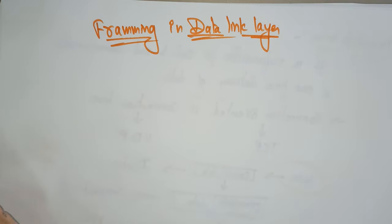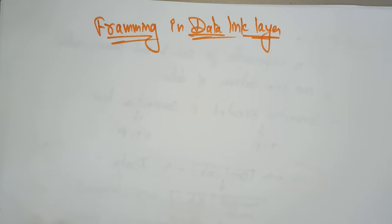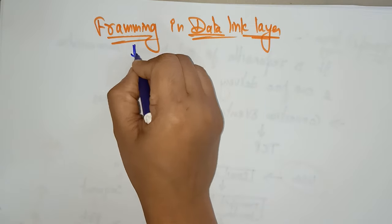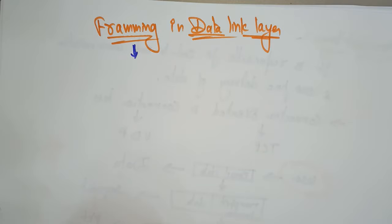Hi students, welcome back. Coming to the next topic in the subject computer network is framing in data link layer. This is a second design issue in the data link layer. So first of all, what is framing? Framing in data link layer is one of the design issues of data link layer.